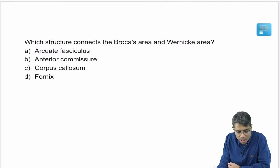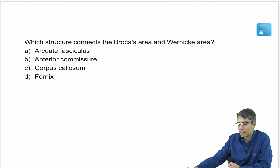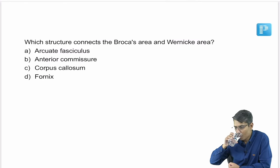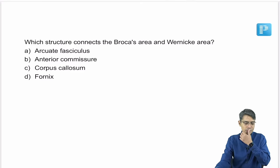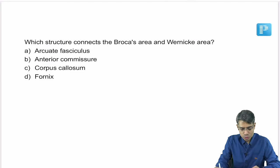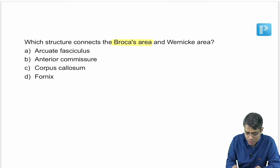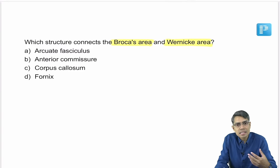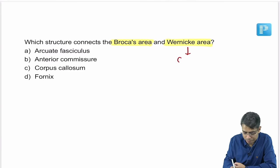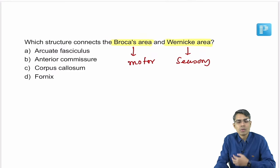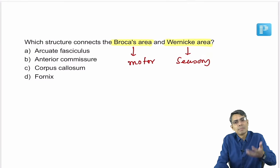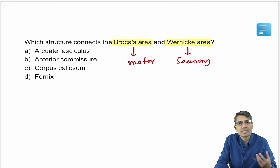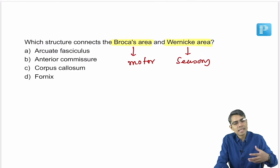Next question: which structure connects Broca's area with Wernicke's area? Wernicke's area is the sensory area for speech; Broca's area is the motor area for speech. Wernicke's area handles understanding, and Broca's area handles speaking. The connection between these two is the arcuate fasciculus.